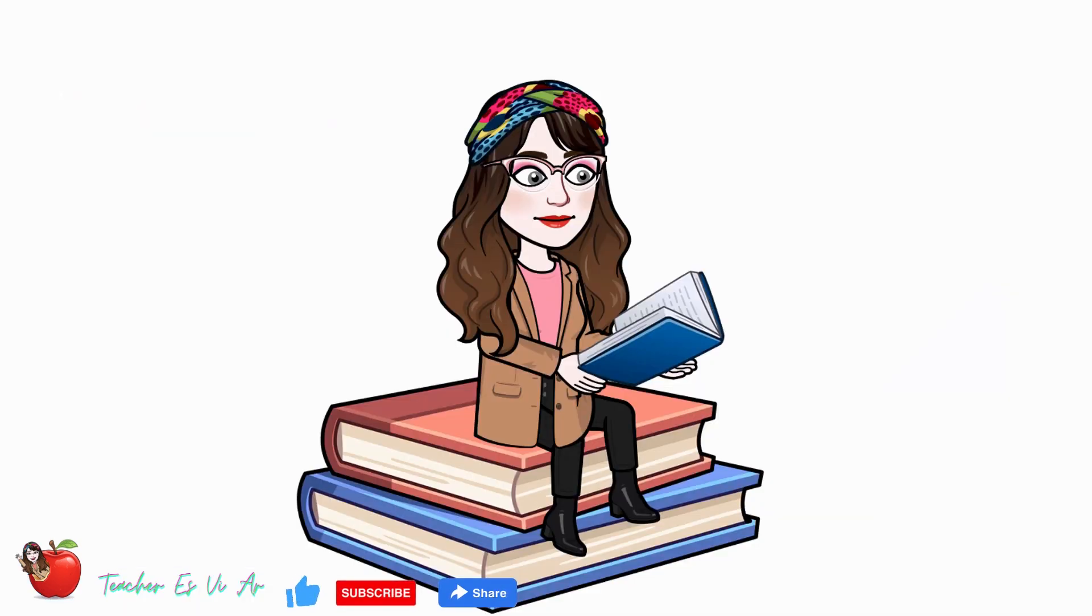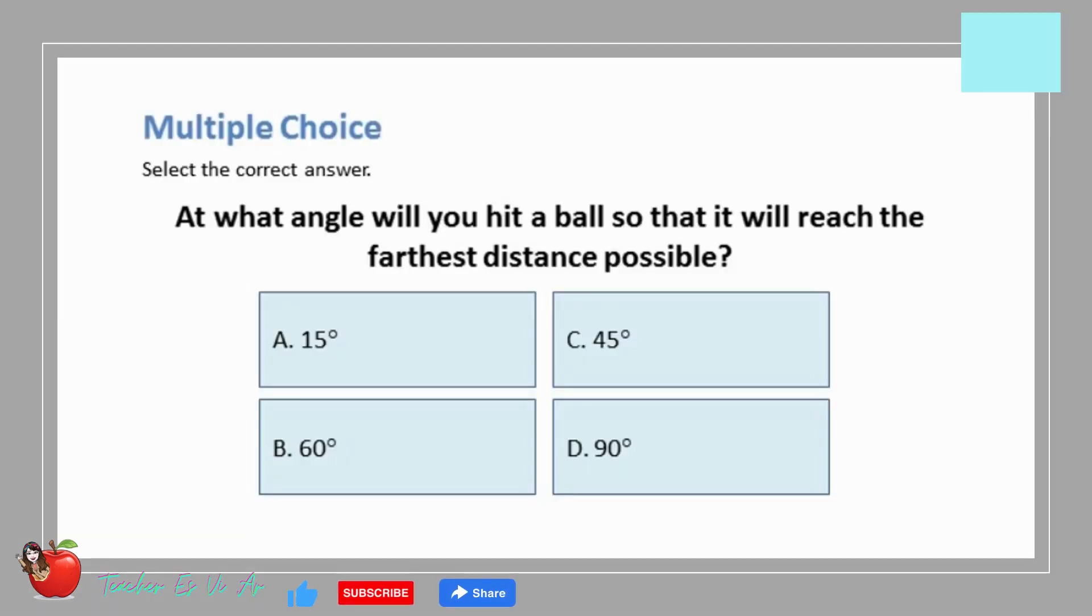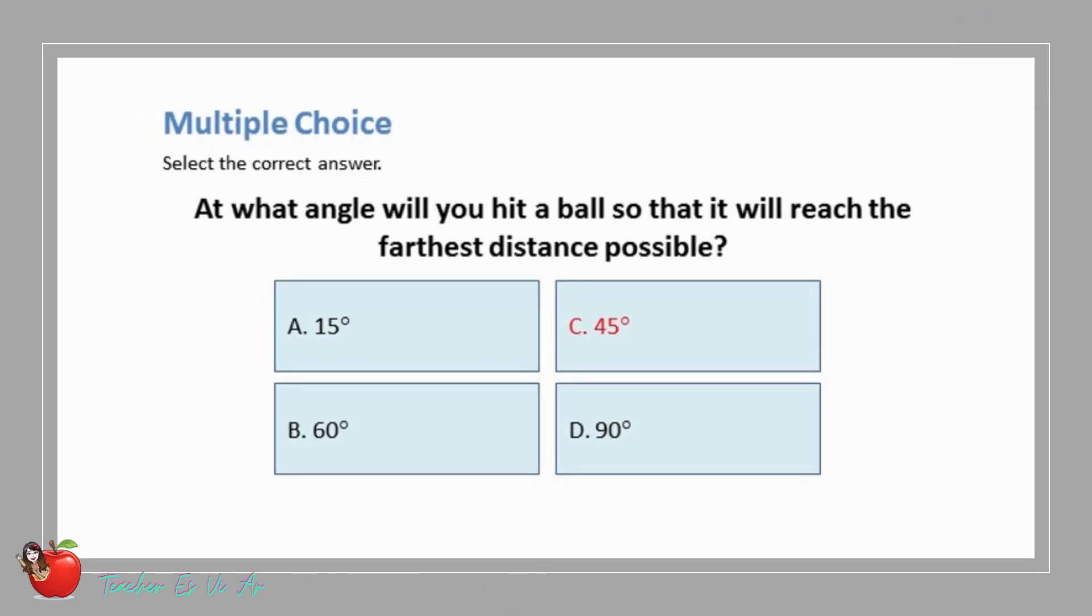There will be an evaluation of your understanding of the lesson. Are you ready? Let's start. Multiple choice, select the correct answer. At what angle will you hit a ball so that it will reach the farthest distance possible? A. 15 degrees B. 60 degrees C. 45 degrees D. 90 degrees. The correct answer is C. 45 degrees.